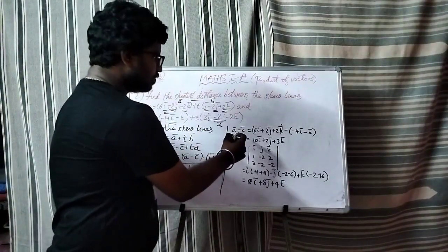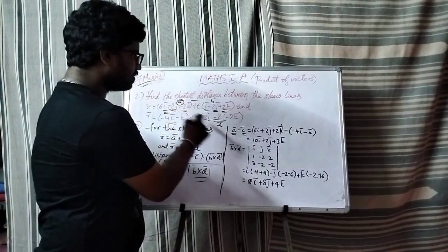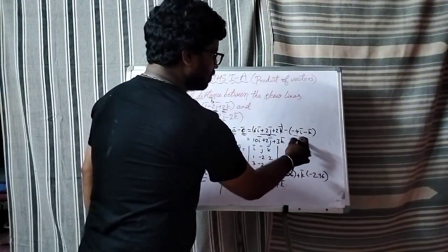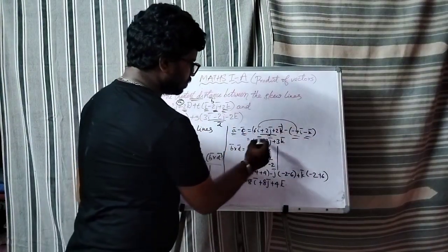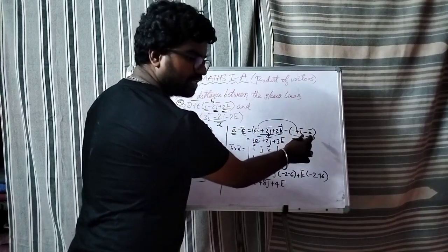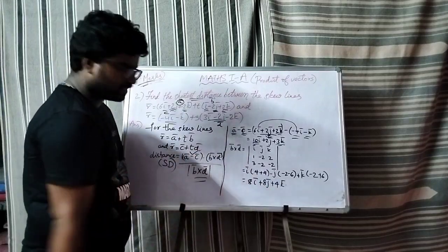Now a bar minus c bar: a bar is 6i plus 2j plus 2k minus c bar which is minus 4i minus k. This gives us 6 plus 4, 10i cap, 2j, and 2k plus k is plus 3k. So a bar minus c bar is obtained.